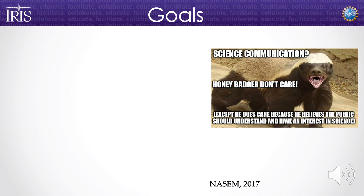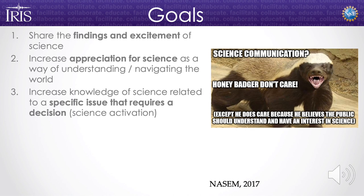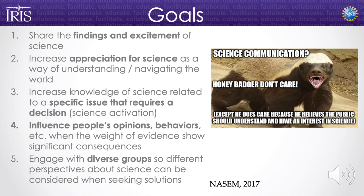What are some of the goals of science communication? This is from the National Academy of Science, Engineering, and Medicine report that came out in 2017. They've identified five main goals: share the findings and excitement of science; increase appreciation for science as a way of navigating and understanding the world; increase knowledge of science related to a specific issue requiring a decision — often called science activation, like talking to policy makers. We can also use science communication to influence people's opinions and behaviors when the weight of evidence shows significant consequences, such as wearing masks during a pandemic. Finally, we can engage with diverse groups to get lots of different perspectives when seeking solutions.